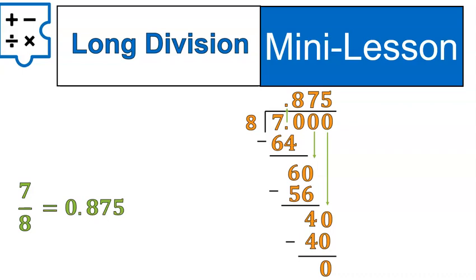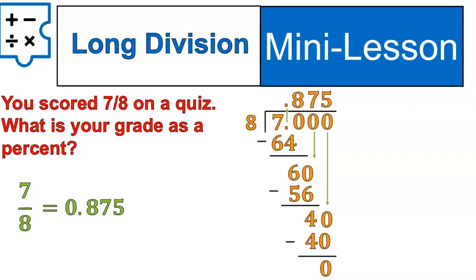Now, incorporating what we learned from our previous lessons, we could ask, if you scored 7 out of 8 on a quiz, what is your grade as a percent? Now we're taking things to the next level, right? Because we've got that decimal, and we can convert it into a percent. So at this point, we could take a fraction and convert it into a decimal, and then from a decimal into a percent.